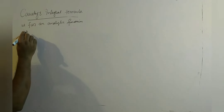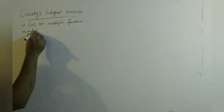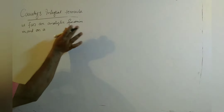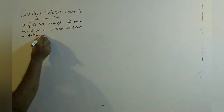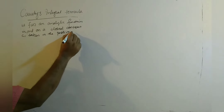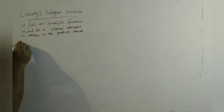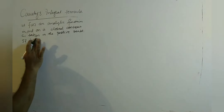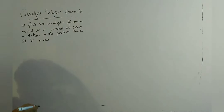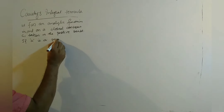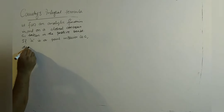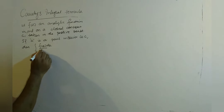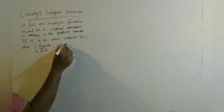analytic function inside and on a closed contour C, taken in the positive sense. If a is a point interior to C, then the integral over C of f(z)dz divided by (z minus a) is equal to 2πi times f(a). So this is the Cauchy integral formula.